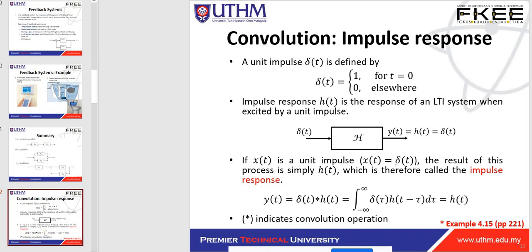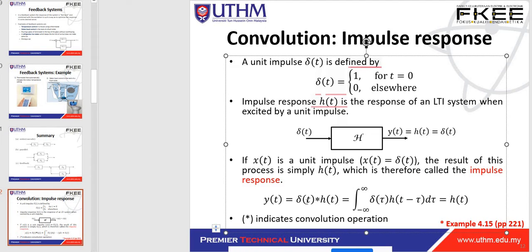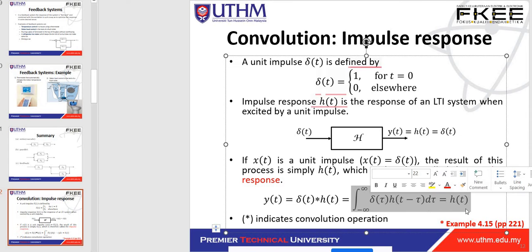If x(t) is the unit impulse, meaning x(t) = delta(t), the result is simply h(t), the impulse response. The formula is: y(t) = delta(t) convolved with h(t). This symbol denotes convolution — delta(t) convolved with h(t). In formula form we use integration from minus infinity to infinity of delta(τ) · h(t − τ) dτ, which equals h(t). We need to change the variable from t to τ. This formula will be used later and must be remembered.